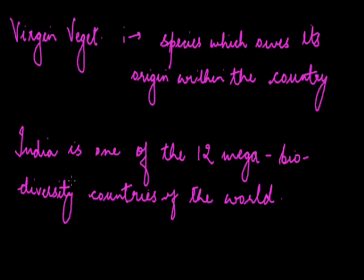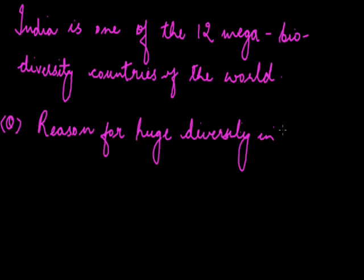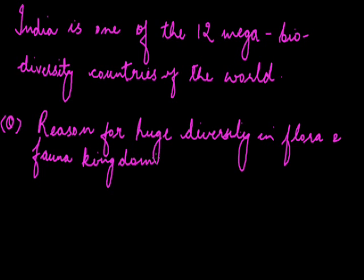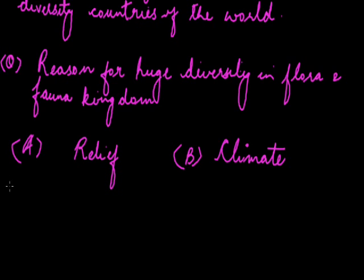Another question which is generally asked in 9th class: What is the reason for huge diversity in flora and fauna kingdom? Flora refers to the plant life and fauna refers to the animal life. We will study this broadly under two features or factors. First is the relief and second is the climate. In relief, we have land and soil. Under climate, we have temperature, photoperiod, and precipitation.